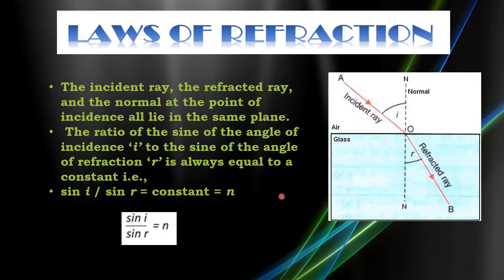This first law is just like the law of reflection as you have studied earlier. The second law states that the ratio of the sine of the angle of incidence to the sine of the angle of refraction is always equal to a constant. That is, sin i divided by sin r equals a constant. This constant is known as the refractive index of the second medium with respect to the first medium. This second law is also named as Snell's Law.